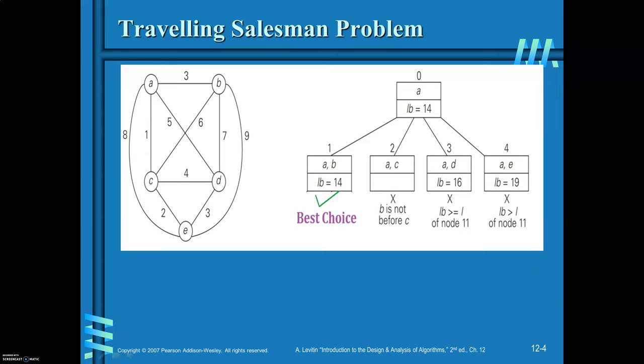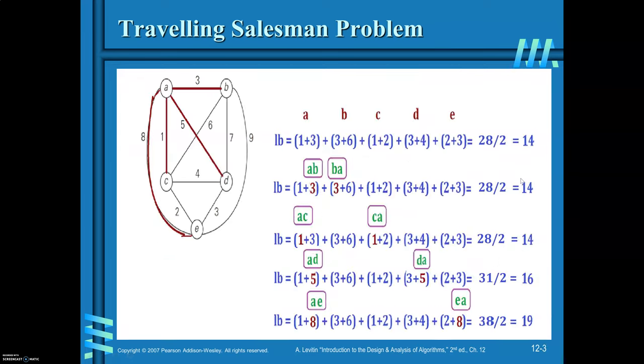From A, you can go to B, C, D, or E. We will see all possibilities — calculating the lower bound for each case: if you go to B, if you go to C, if you go to D, and if you go to E.